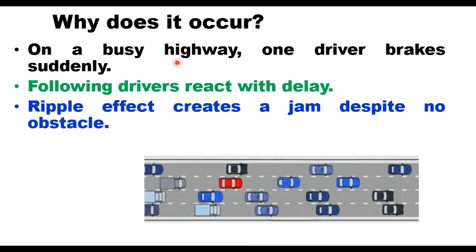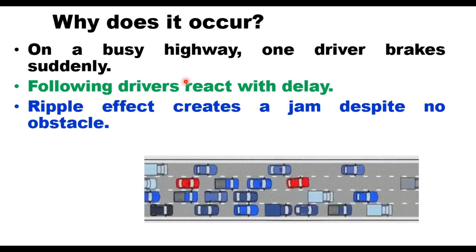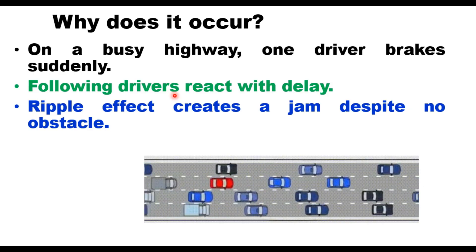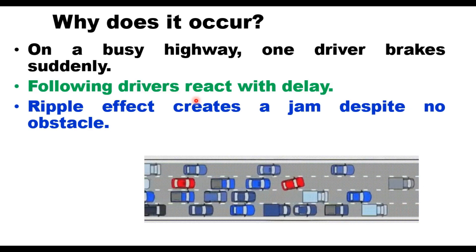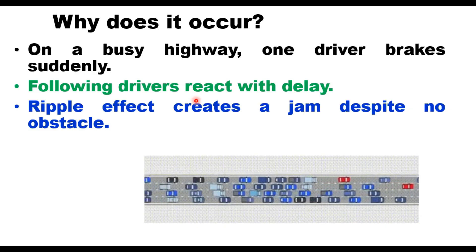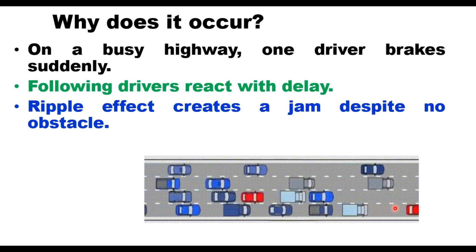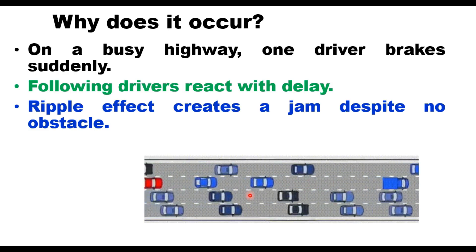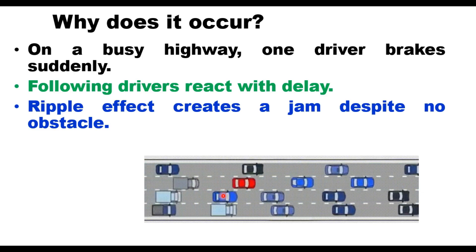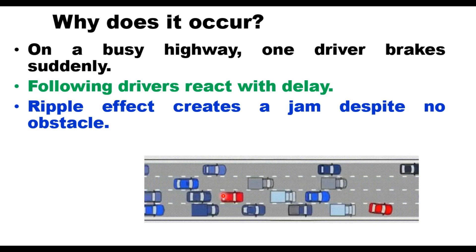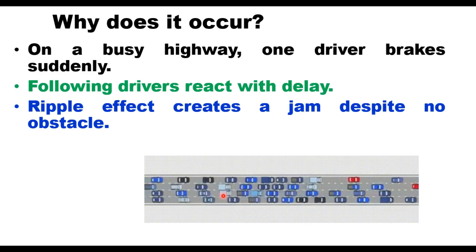So why does it occur? It occurs due to some unexpected action of a particular driver. On a busy highway, vehicles are moving at low but constant speed, and suddenly a driver changes the lane. That creates a disturbance, which creates high traffic density, and because the traffic is not able to absorb the disturbance, a jam-like situation is created.